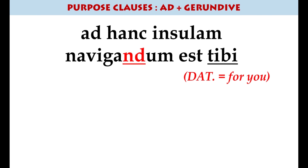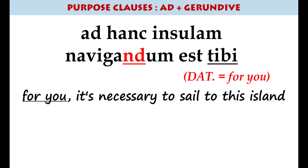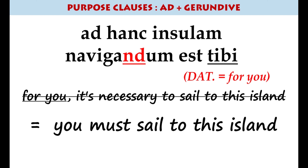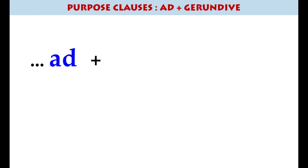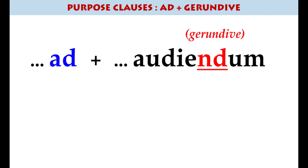Another example: 'it's necessary for you to sail to this island'. Here: 'Navigandum est tibi' — 'tibi' being the dative. But the most common form you will see at GCSE in your language paper will be with the word 'ad' in front of it, and therefore with the gerundive in the accusative.